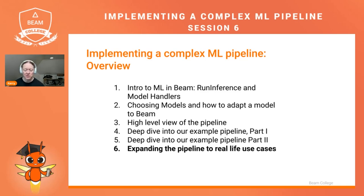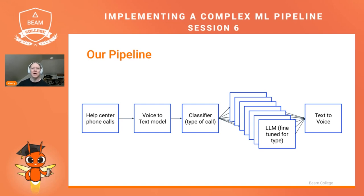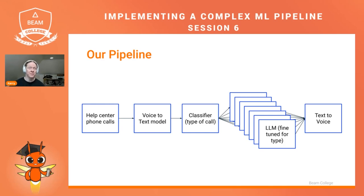So now we're going to zoom out a little bit and talk about how we can go from this basic example pipeline to solving real-world problems. Our pipeline follows this fairly simple pattern of doing some inference, using a classifier to then send data to different models, and collecting the output of those models and then doing another transformation or another inference on the output, assuming that all those models are essentially fine-tuned — they accept the same inputs and give the same outputs, but they're fine-tuned to different use cases represented by those different classes of data.